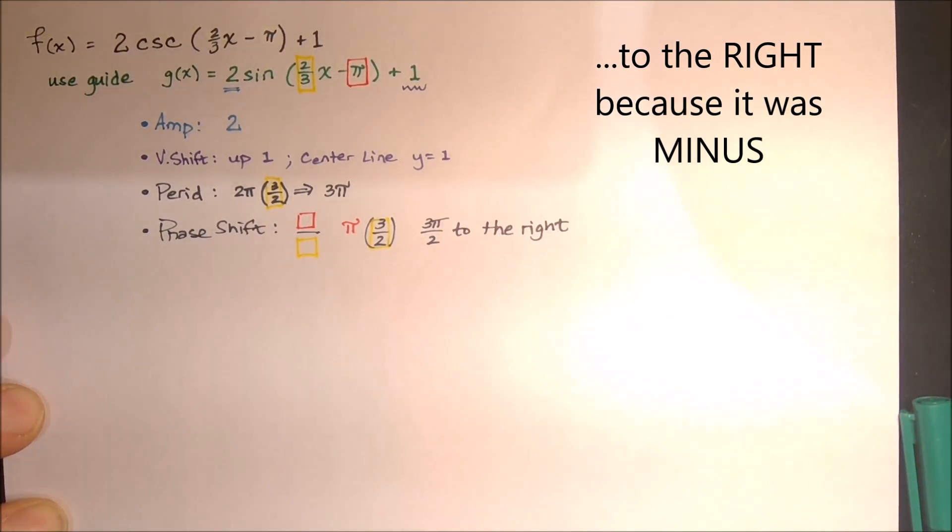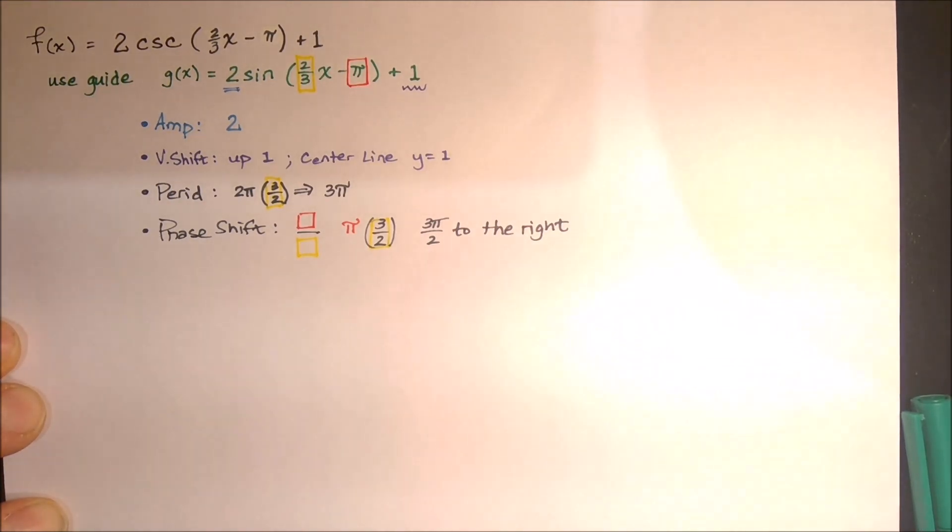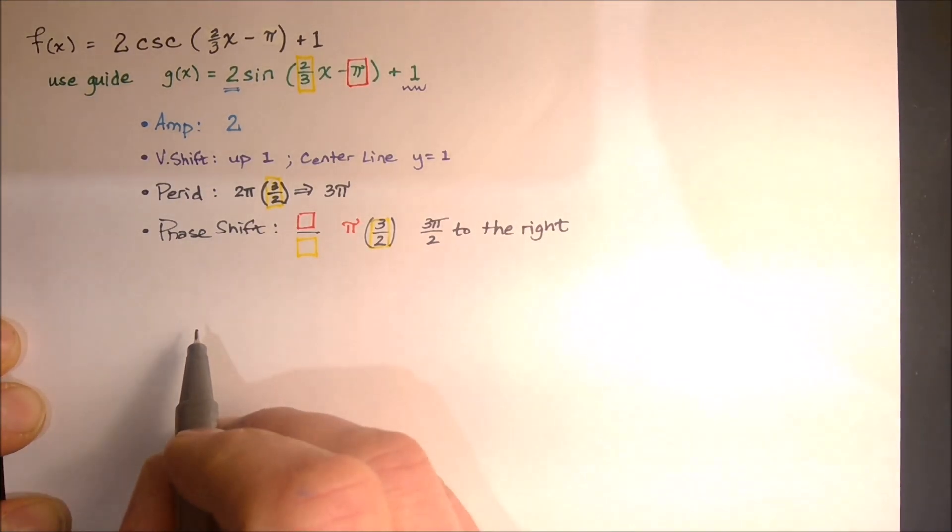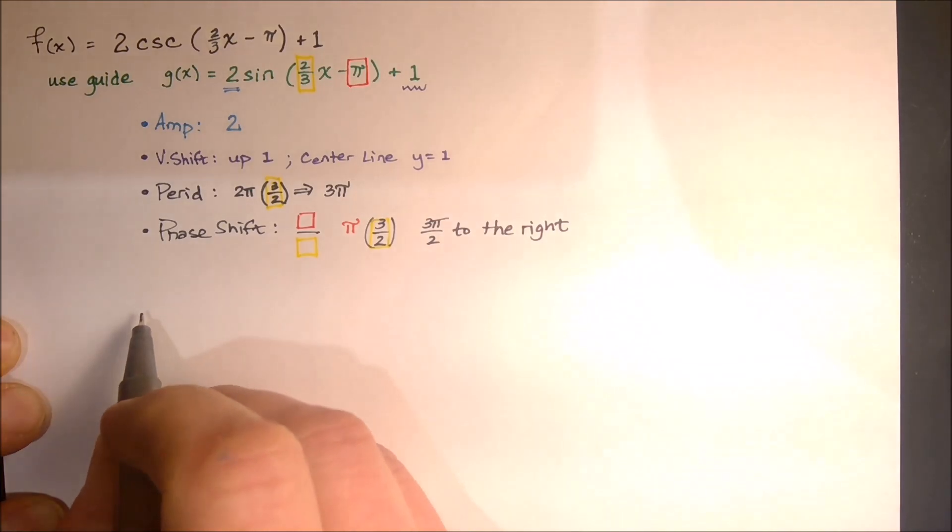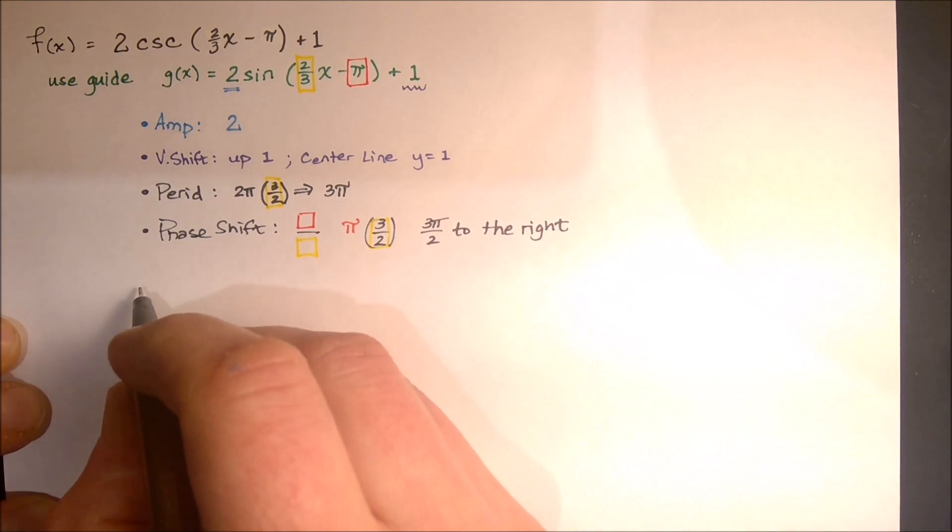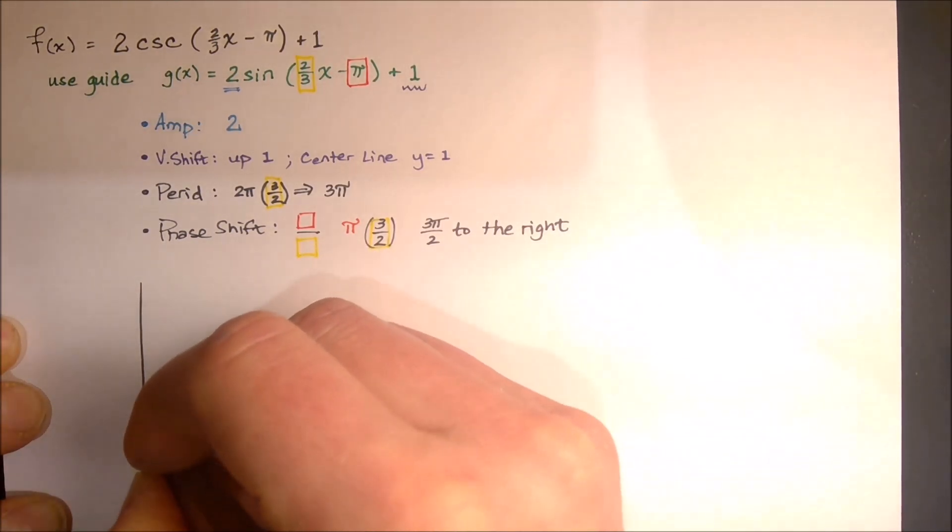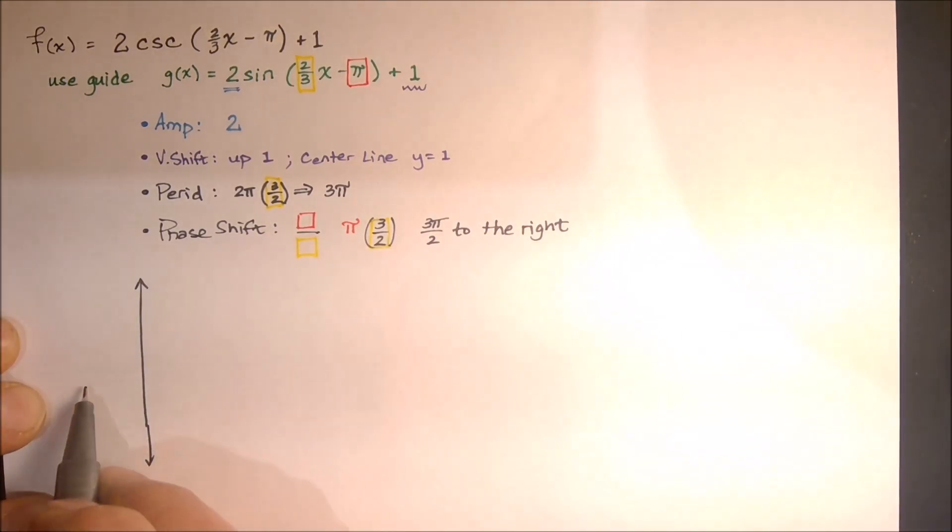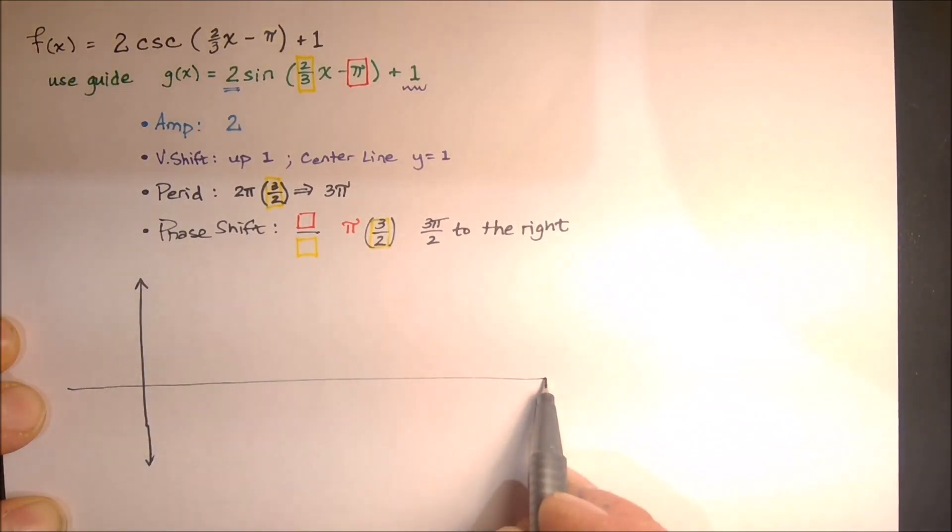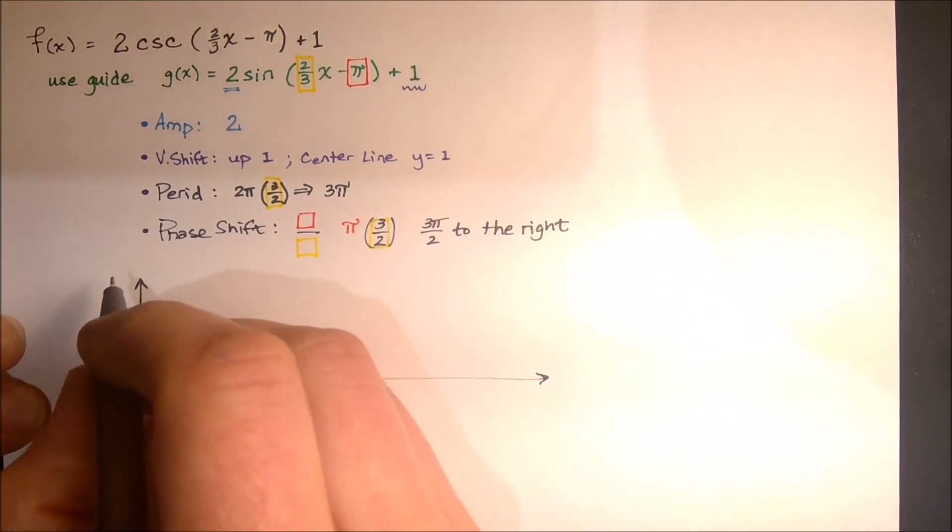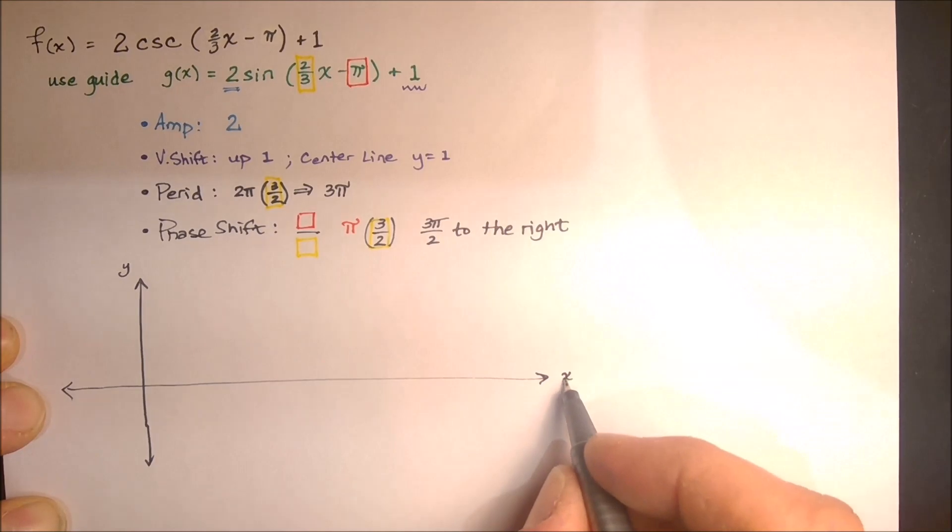Okay, so we have enough written here to actually sketch out a guide function. So what I'm going to start with, I'm going to give myself my x and y axis. Since it shifted to the right, I have an idea where that stuff's going to be. It's also shifted up one. So again, it's a sketch, so it's not going to be perfect.